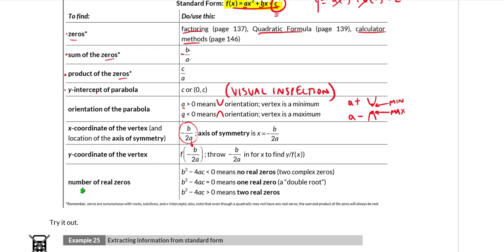And then of course, the number of real zeros, we already talked about this. This has to do with the discriminant. We did discuss this on a previous page. The discriminant will tell us whether we have one, two, or no real zeros. If the discriminant is negative, no real. If the discriminant equals zero, one real. If the discriminant is positive, is greater than zero, two real.